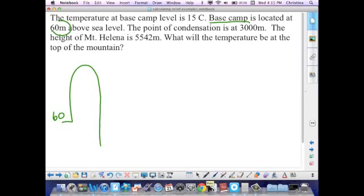The temperature here is 15 degrees Celsius. Our point of condensation is at 3,000 meters. And the height of Mount Helena is 5542m.